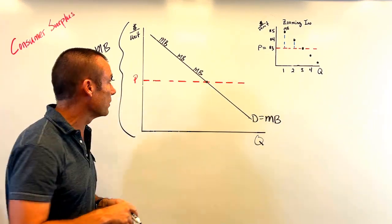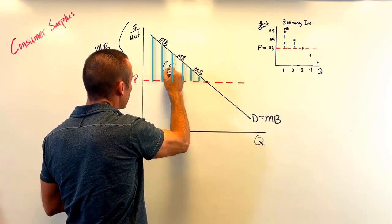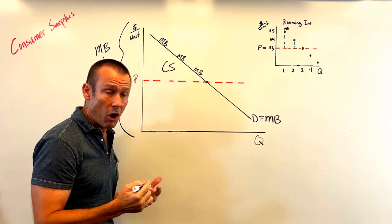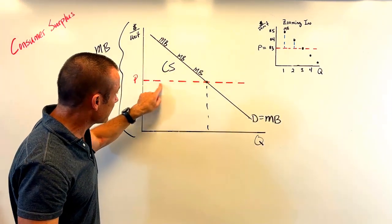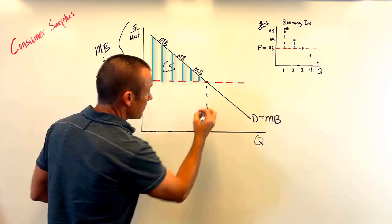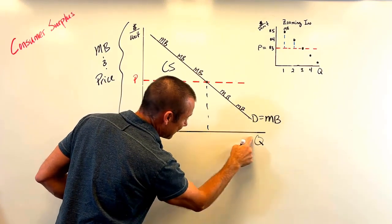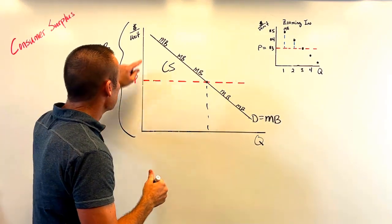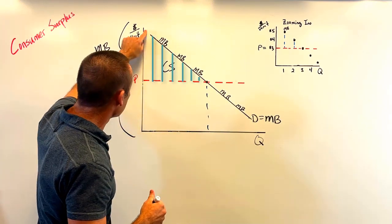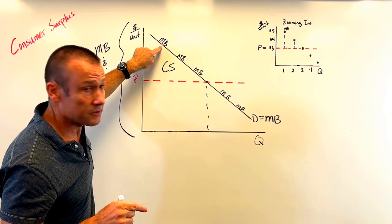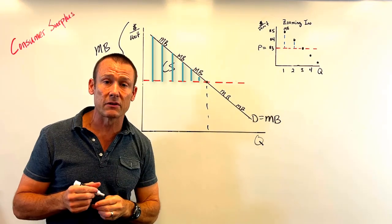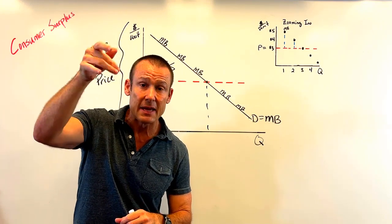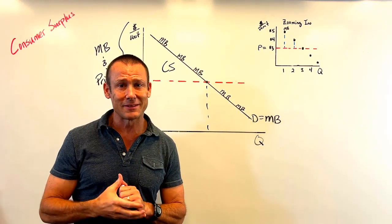This triangle is our consumer surplus — every one of these goods has a dot sitting above the price point. We buy all goods for which the marginal benefit exceeds the price, but since marginal benefit keeps going down, we don't buy goods where the price is higher than the benefit. That leaves us with this triangle. Consumer surplus is found between the price the consumer has to pay and the demand curve — it's the difference between the maximum somebody's willing to pay and the price they do have to pay.